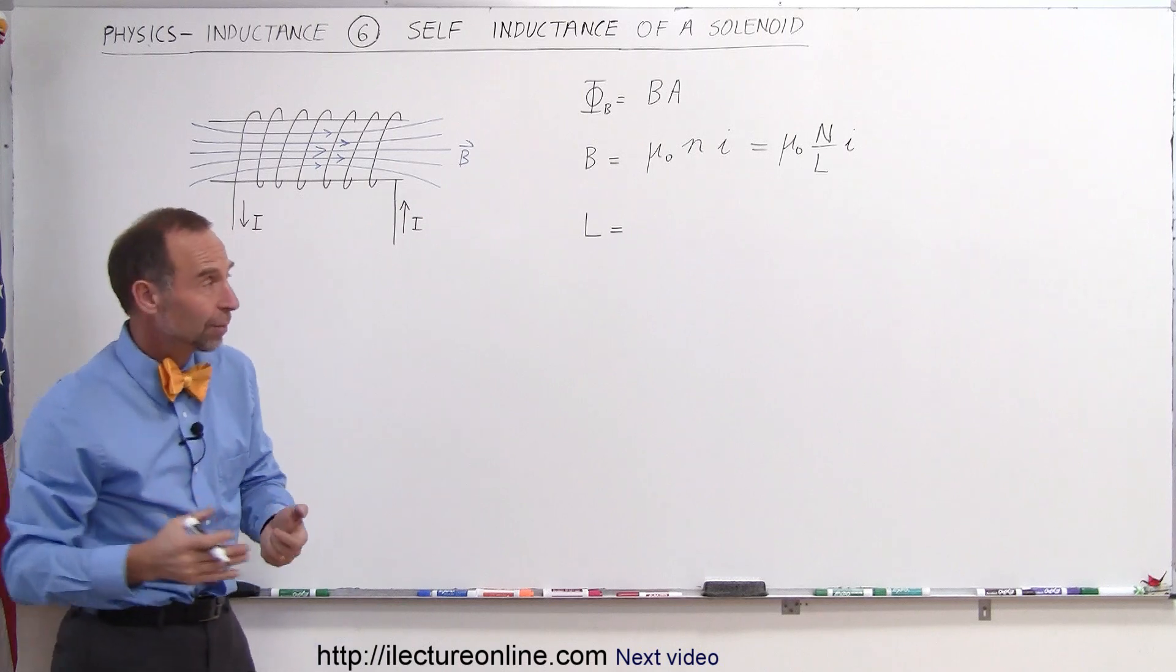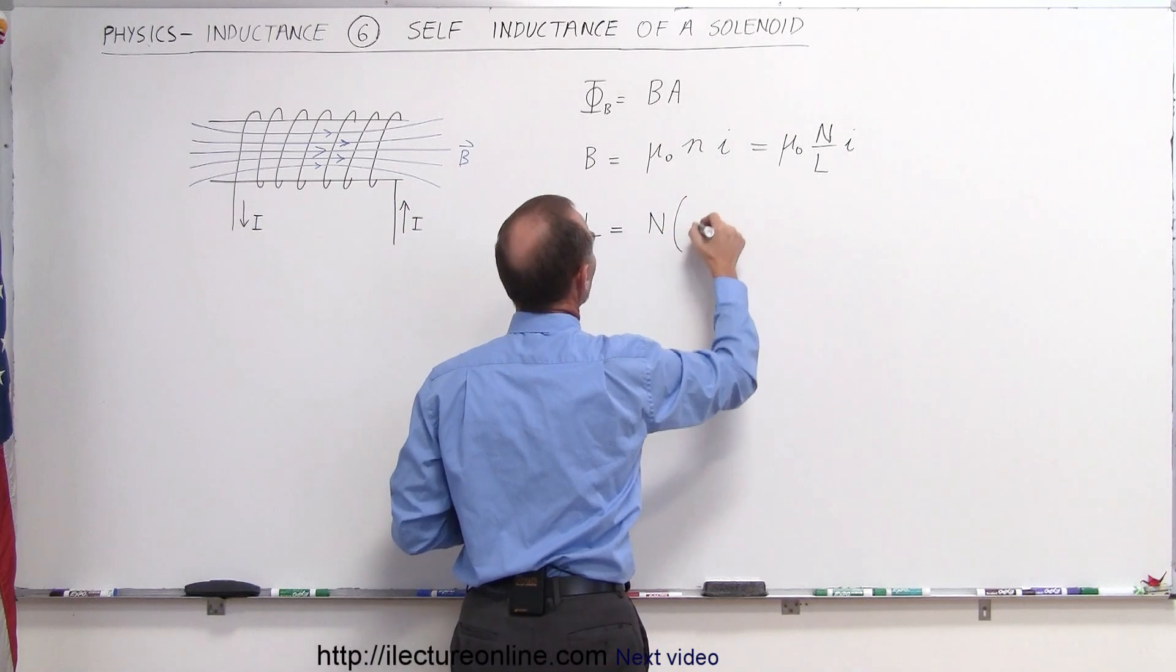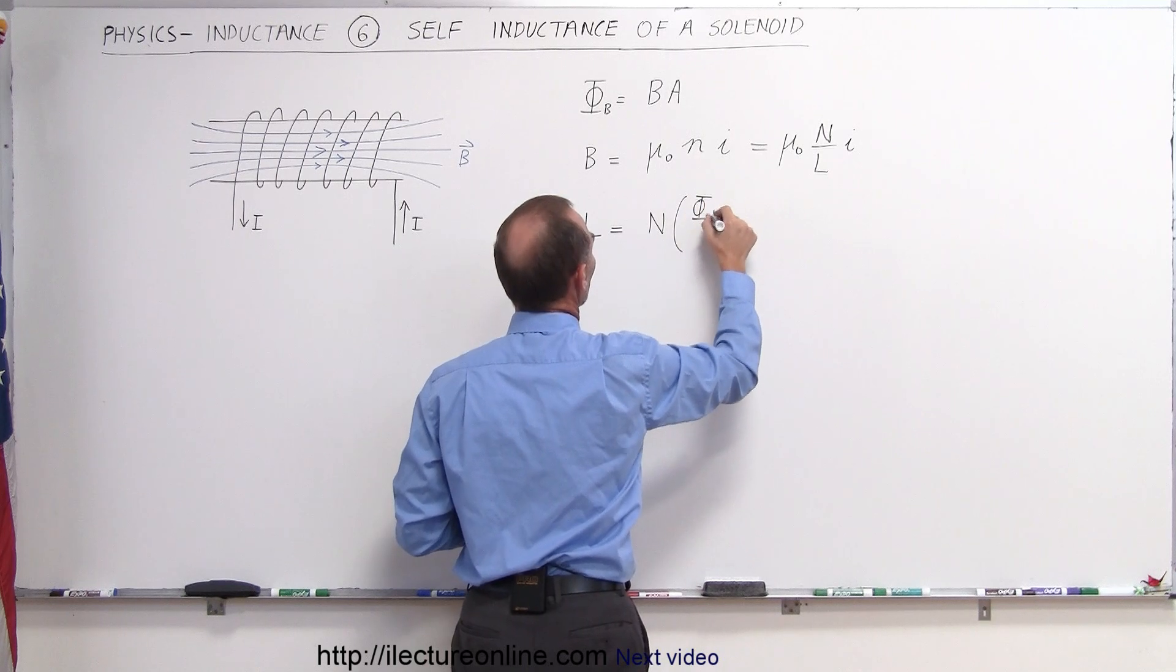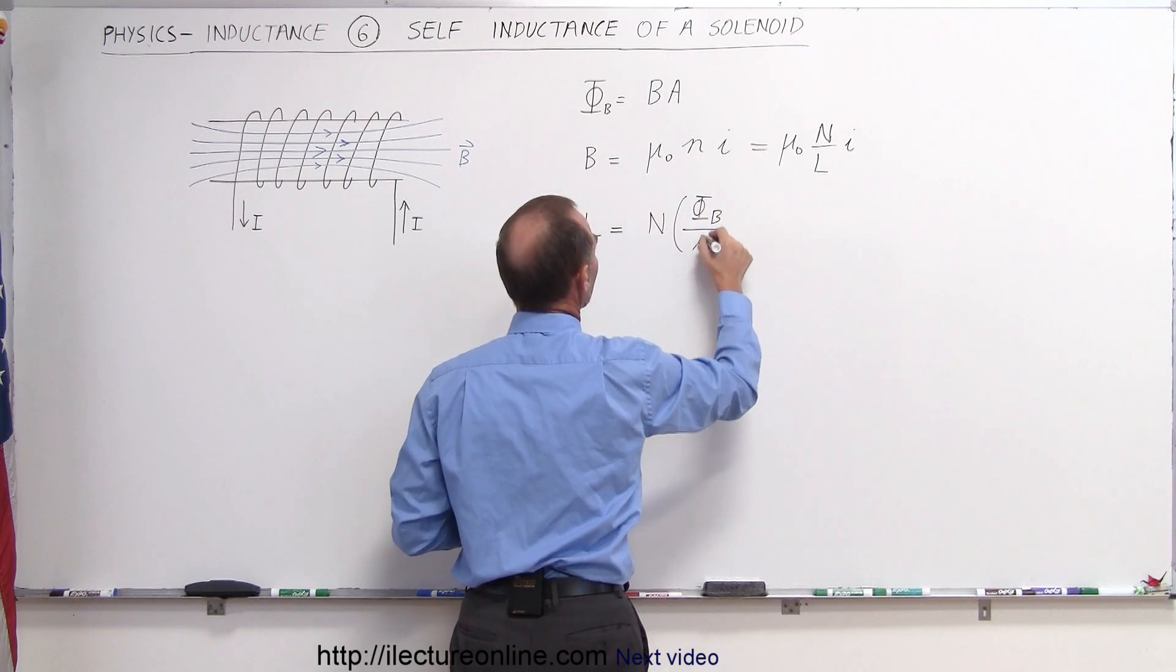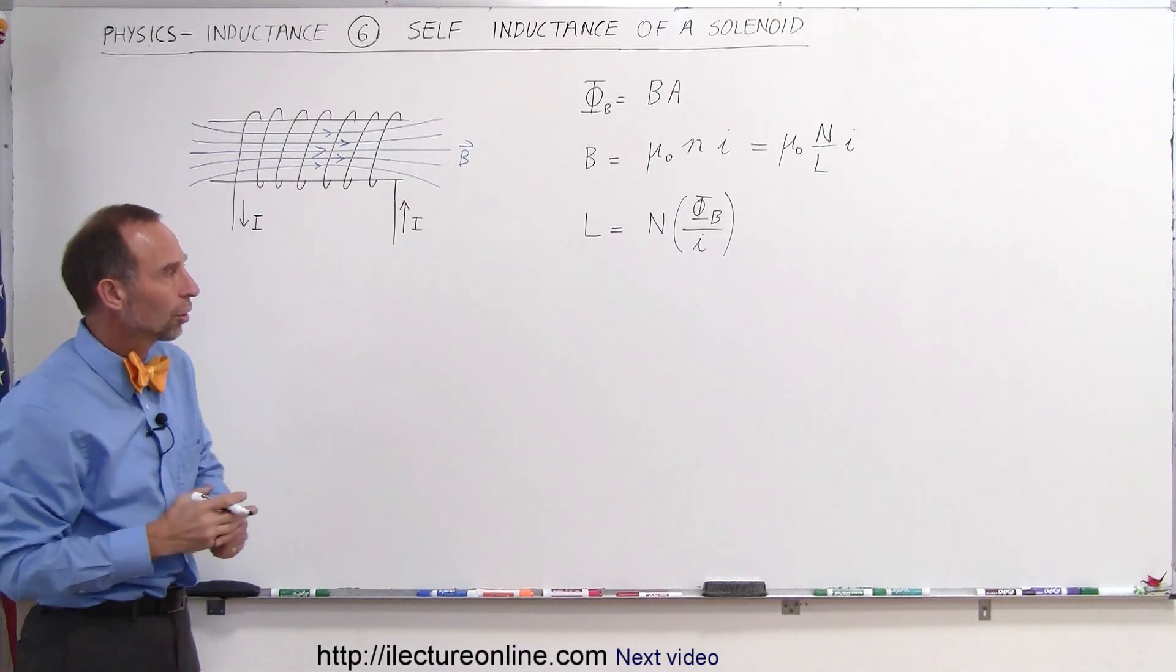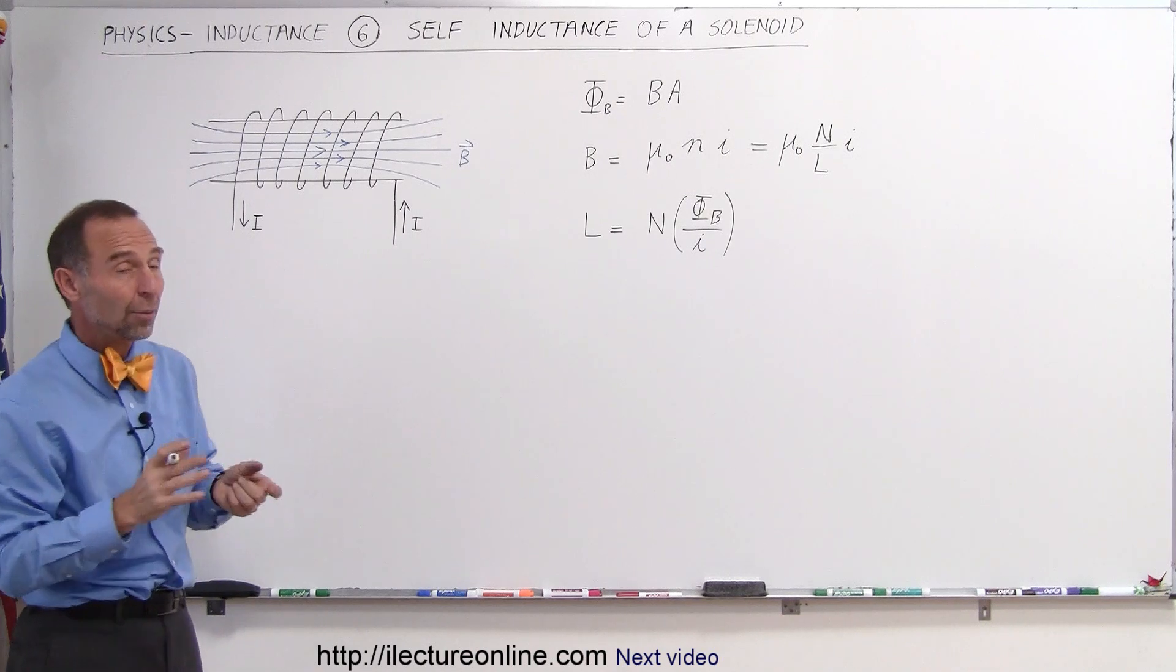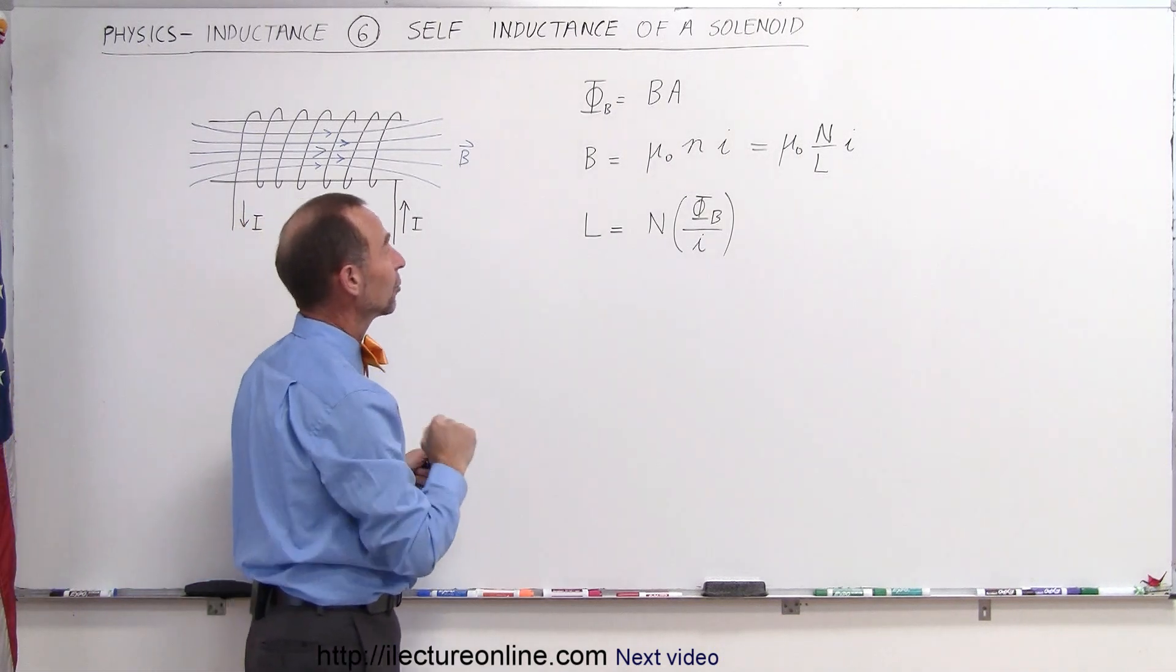the definition of self-inductance, basically, is equal to the number of loops times the ratio of the flux going through the loops divided by the current that drives the flux through the loop. So it's the ratio of how much flux per unit current times the number of loops that we have, which is the self-inductance. So now what we have to do is kind of combine those together.